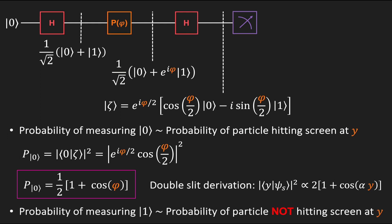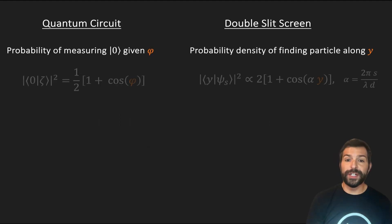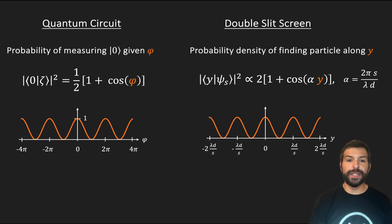And again, the probability of measuring a one is basically equivalent to the probability density of a particle not hitting the screen in that particular given value of y. So comparing our circuit models side by side with the double slit experiment, we see that we get the same interference pattern where the angle phi is simply a scaled version of y that depends on the distance between the plate and the screen d, the separation between the slits s, and the wavelength lambda.